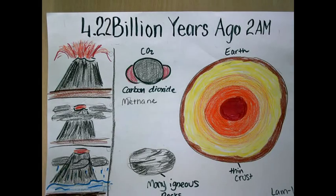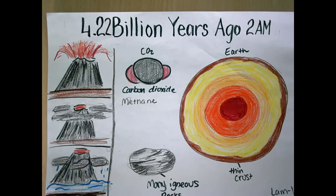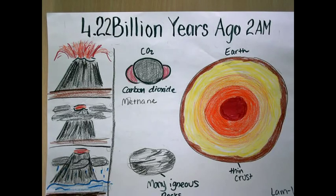4.22 billion years ago, at 2 a.m., water was created when the volcanoes erupted and there were little clouds of gas, and then there was water. Earth was developing an atmosphere. The gases were methane and carbon dioxide. The Earth had a thin layer on the outside, and the most common rock was igneous rocks because of the magma.